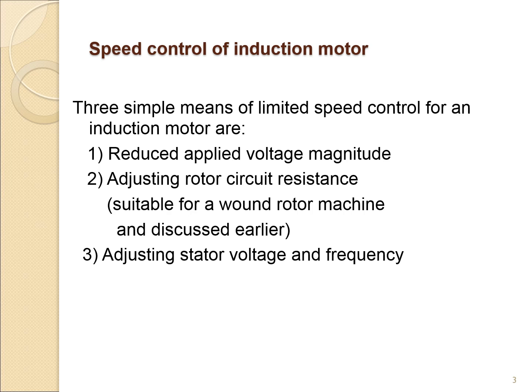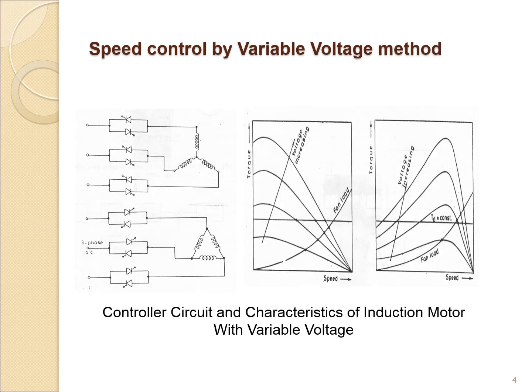One method is reducing the applied voltage magnitude. Another is adjusting rotor circuit resistance, which is suitable for wound rotor machines and will be discussed later. There is also adjusting stator voltage and frequency control, which is one of the main methods of speed control for induction motors.